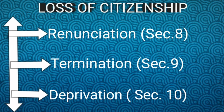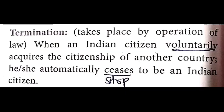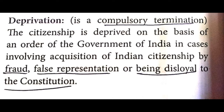Loss of citizenship occurs in three ways under Part 2 of the Constitution of India, Articles 5 to 11: Renunciation (Section 8), Termination (Section 9), and Deprivation (Section 10). Renunciation is a voluntary act when a person acquiring citizenship of another country gives up their Indian citizenship. Termination takes place by operation of law — when an Indian citizen voluntarily acquires citizenship of another country, they automatically cease to be an Indian citizen. Deprivation is a compulsory termination where citizenship is deprived by an order of the government of India if a person is involved in fraud, false representation, or being disloyal to the Constitution.